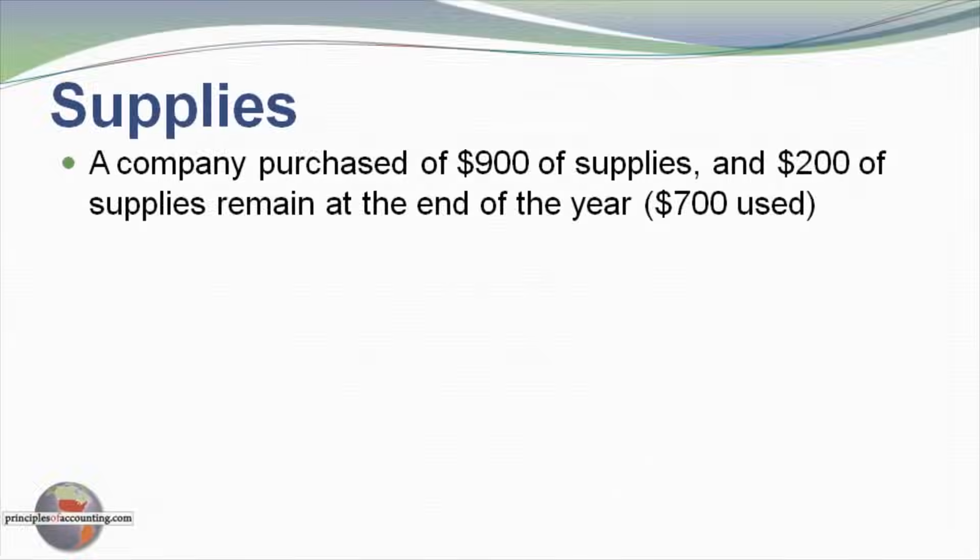In this first illustration of adjusting entries, we're going to look at the supplies account. Supplies is essentially a prepaid expense item — we're buying supplies to be used in the future. In this particular example, a company purchased $900 of supplies during the period, and at the end of the period, $200 of supplies remained, meaning that $700 of supplies was used. There was no beginning inventory in this case.